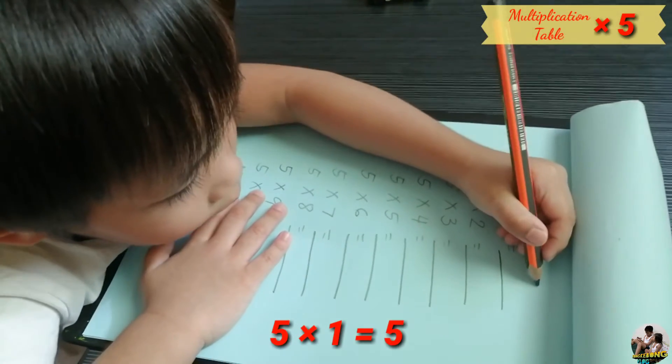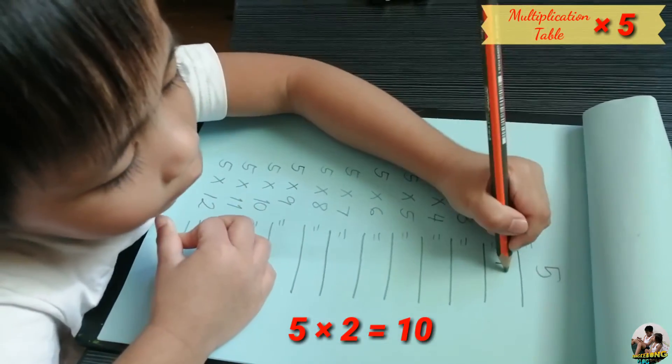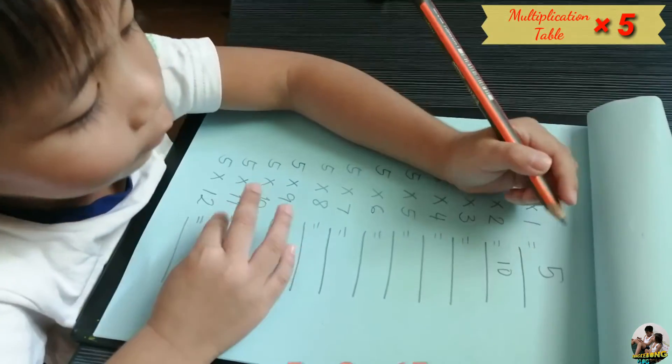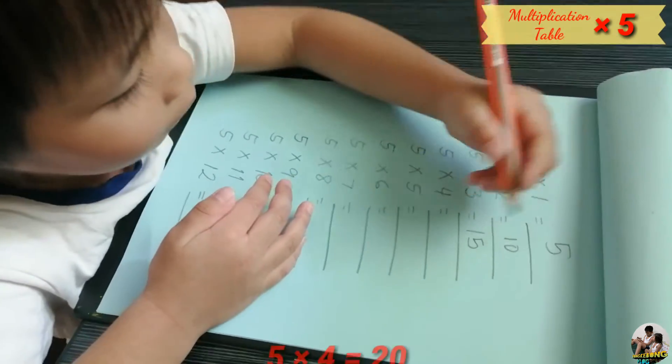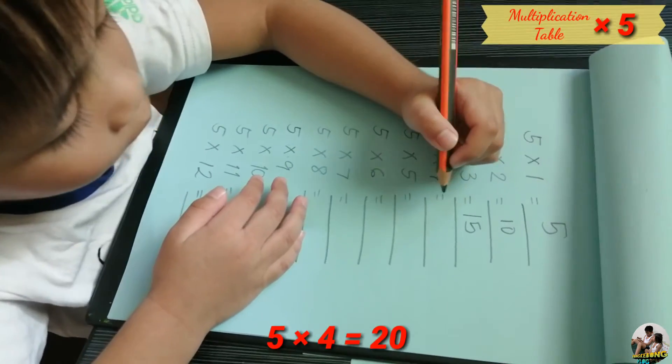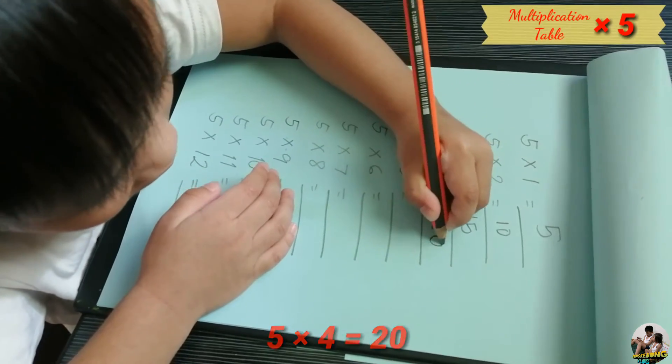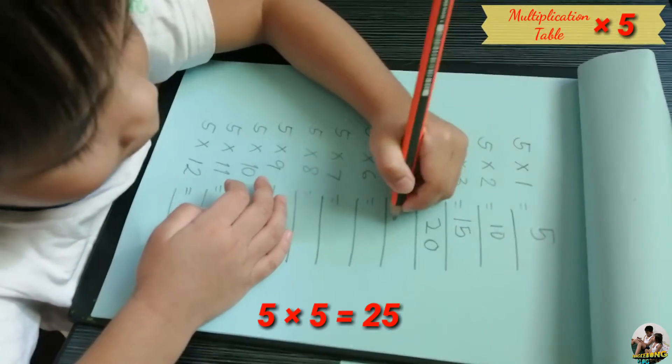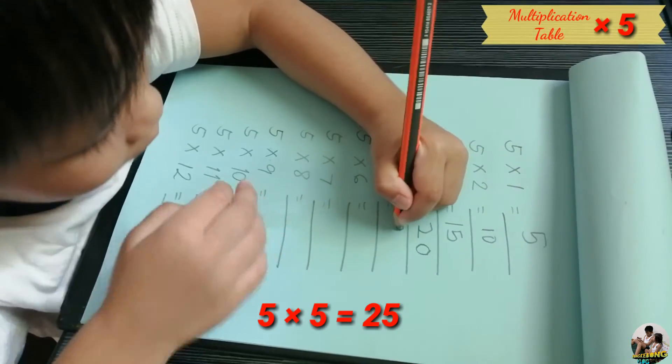Five times one equals five. Five times two equals ten. Five times three equals fifteen. And five times four equals twenty.